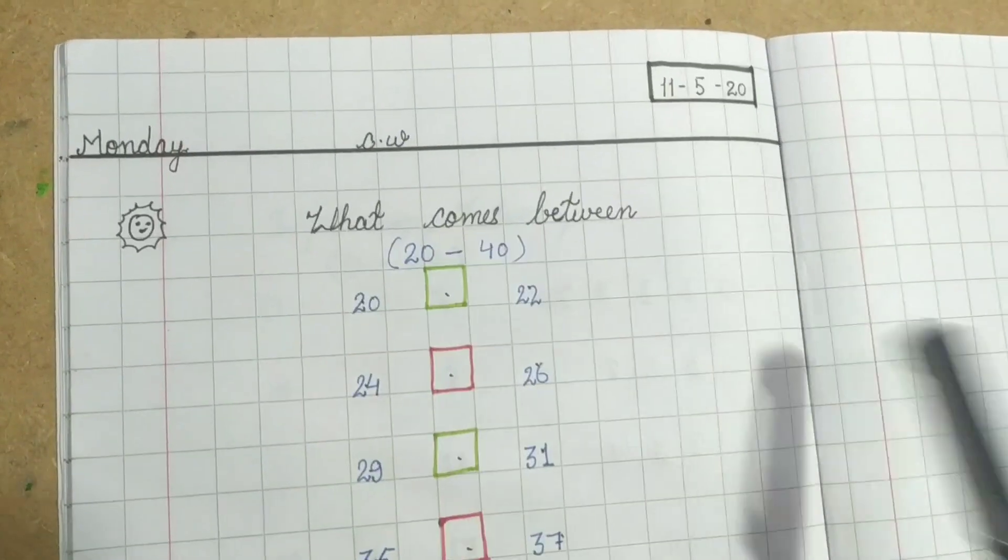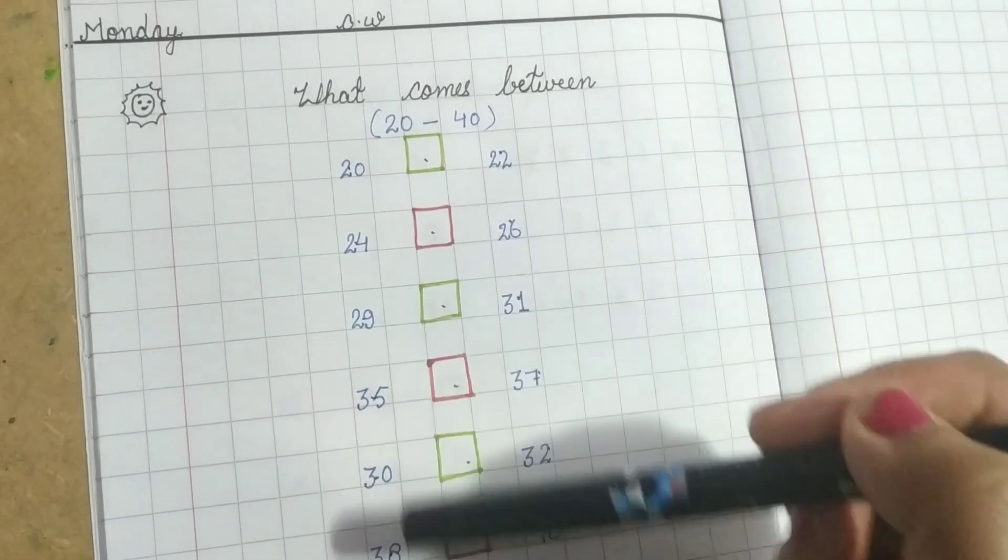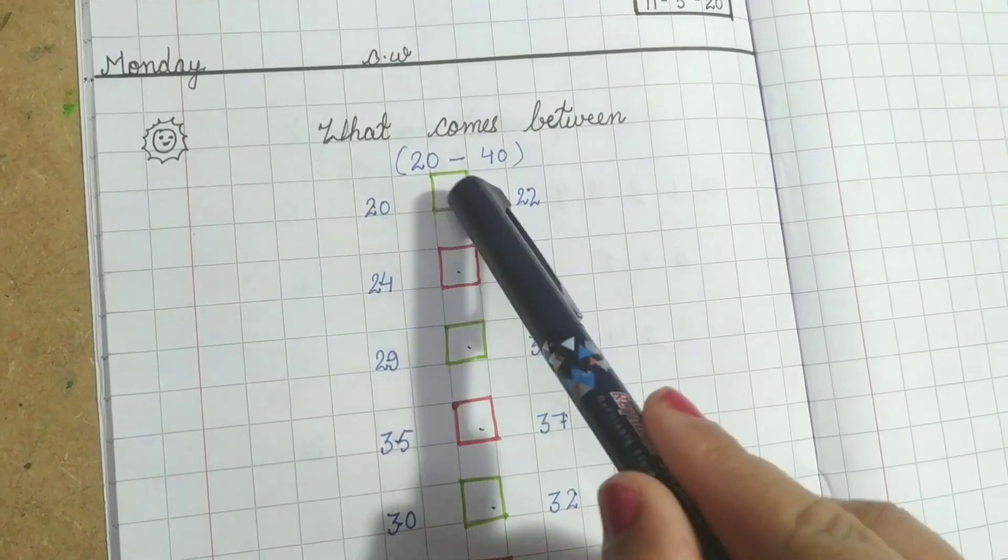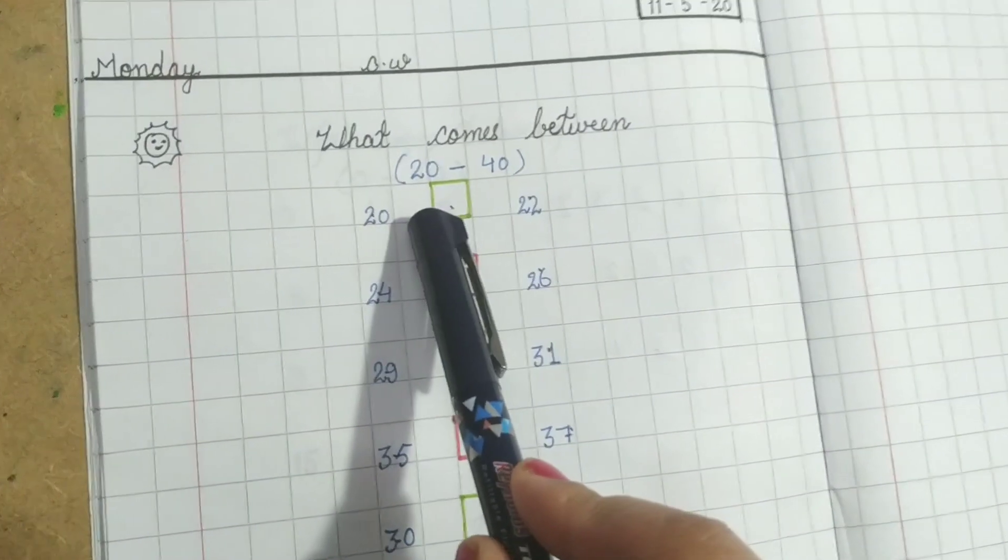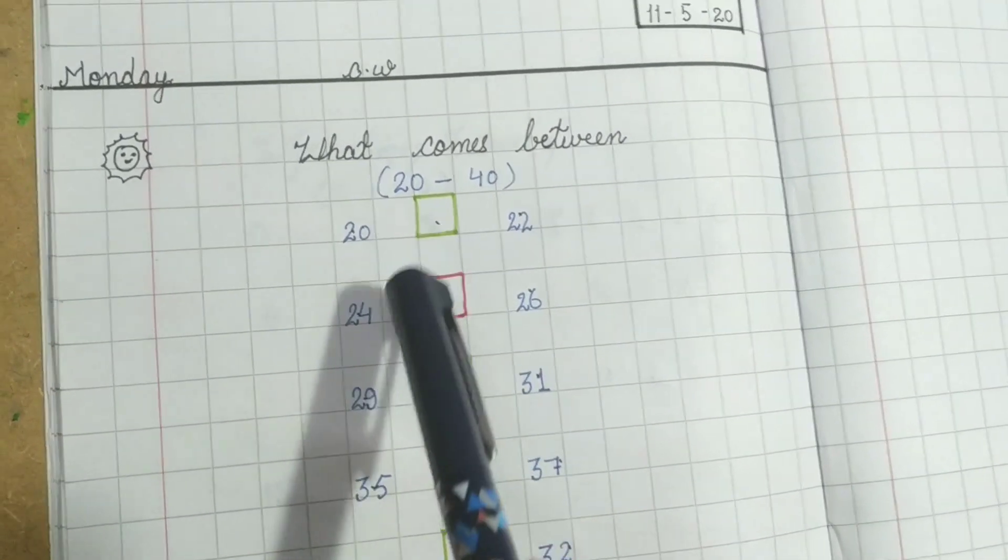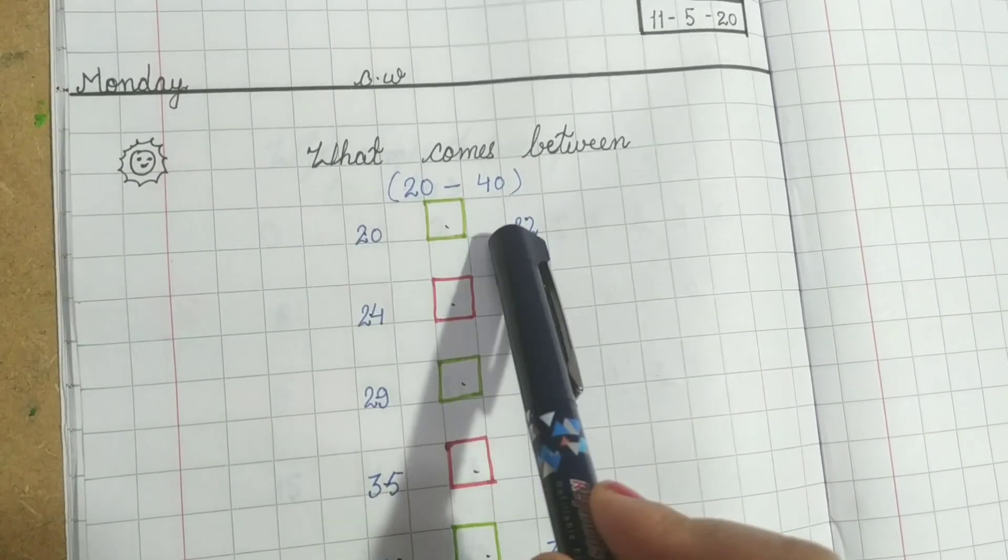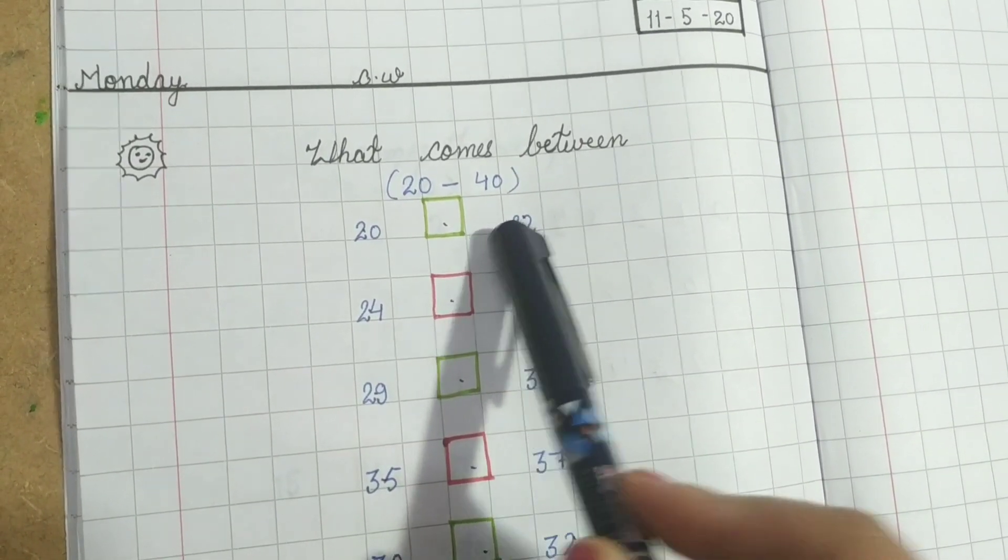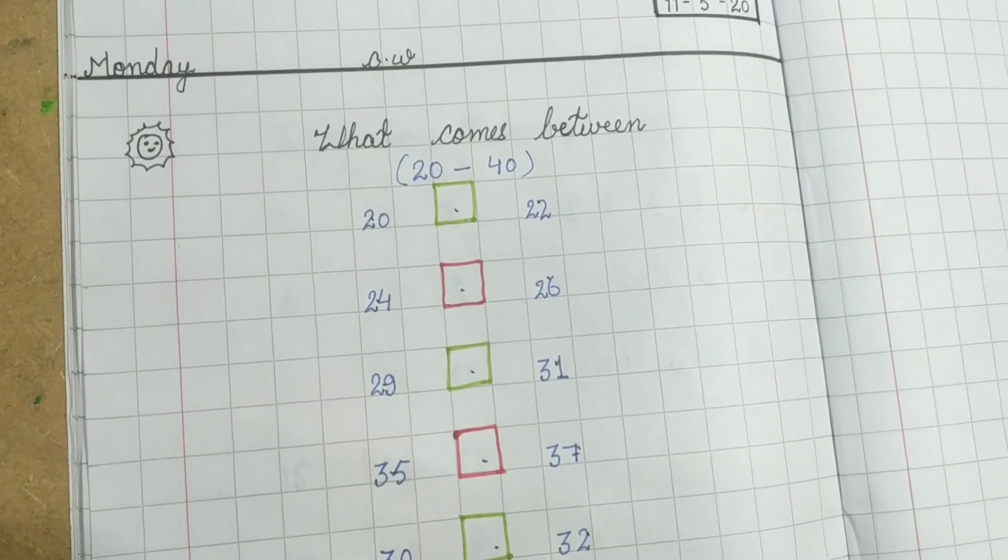You have to write these numbers and answer what comes in between them. For example, what comes between 20 and 22? You have to start counting after 20, and you will get the answer. It's very easy, and you can understand it very well.